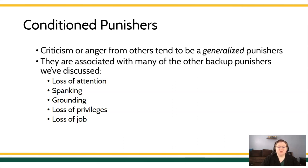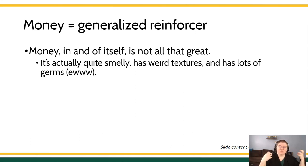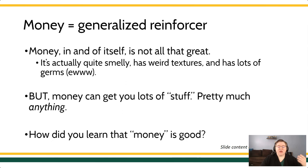Another way to think about generalized reinforcers is: what does it get you? There's one stimulus that is almost a universal generalized reinforcer — money. Money is the ultimate generalized reinforcer. Money in and of itself is not that great — it's kind of smelly, covered in germs, has weird textures. But money is amazing because it gets us all kinds of stuff; there's almost nothing that money can't get you. We learned that money is a good thing because we have a system, an economy, where giving this piece of green paper to people allows us to receive goods, services, treats, and rewards.